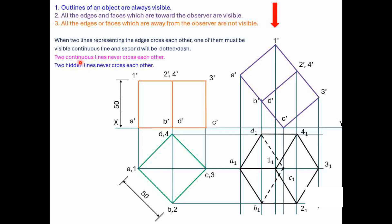Rules 5 and 6 also apply here. Additionally, if two dashed lines are intersecting or joining at a particular point and a third line is also drawn from that point, the third line will also be dashed. As confirmed, C to 3 is far from the observer and is invisible. In this way we can apply these rules to easily identify which edges are visible and which are invisible. Remember the rules and try to apply them in a diagram to represent it correctly. Thank you so much for watching the video.